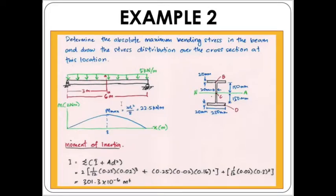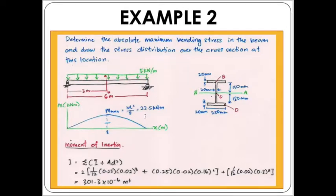First, in order to determine the value of the stresses, we need to determine the value of the maximum moment. Since we have a simple beam with only a UDL, the maximum moment can be calculated using the equation M_max = wL²/8. The value here is 22.5 kilonewton-meters, and since the UDL acts downwards, this is a positive bending moment.